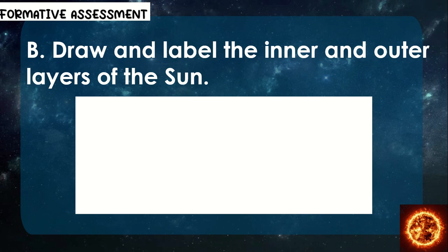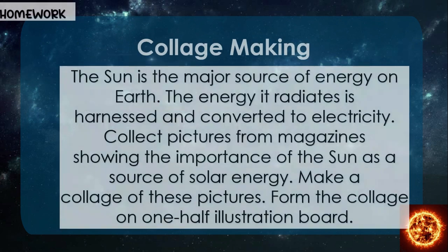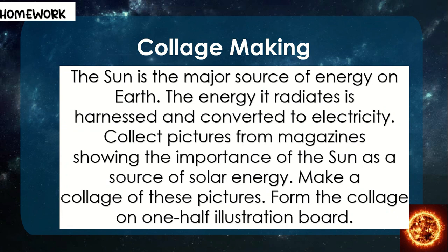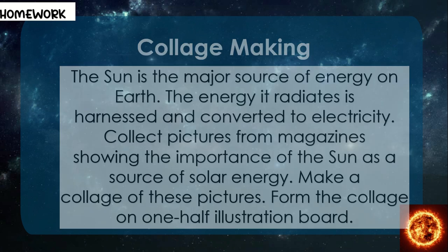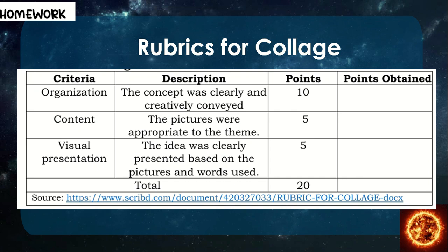Draw and label the inner and outer layers of the sun. For your homework — collage making: the sun is the major source of energy on Earth. The energy it radiates is harnessed and converted to electricity. Collect pictures from magazines showing the importance of the sun as a source of solar energy and make a collage of these pictures. Form the collage on one half illustration board. Rubric criteria: organization, content, and visual presentation.